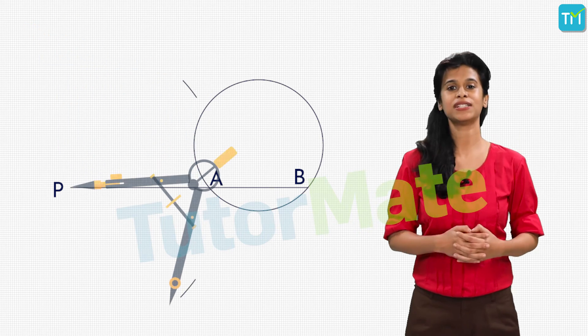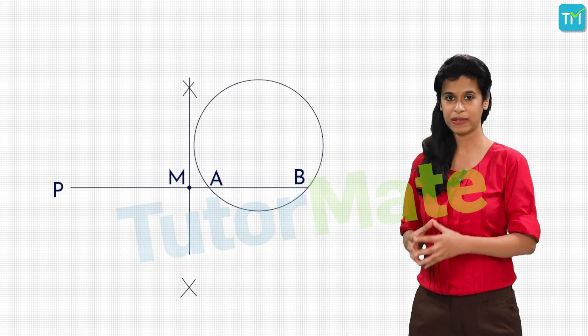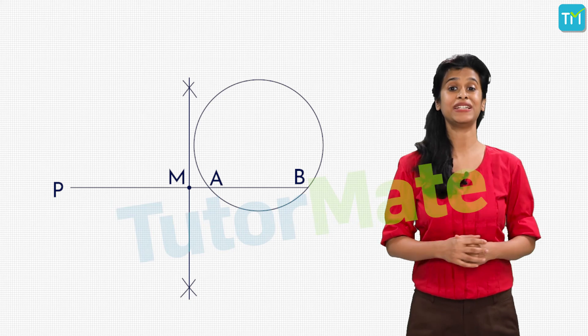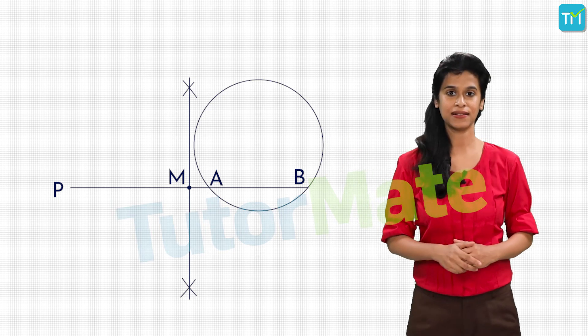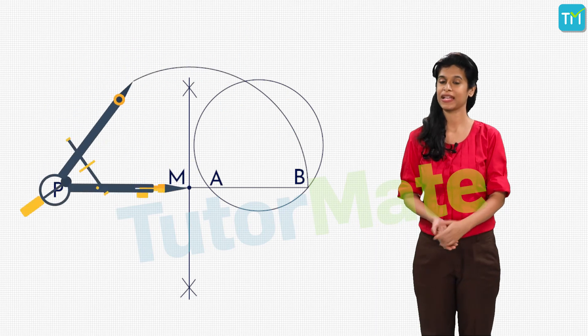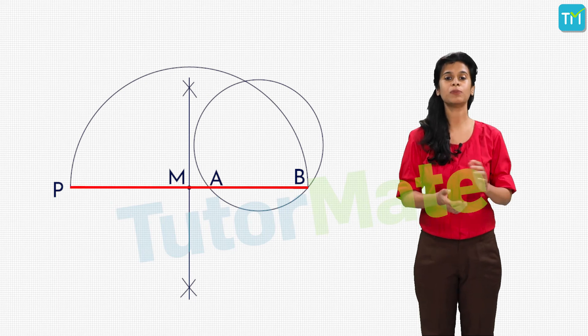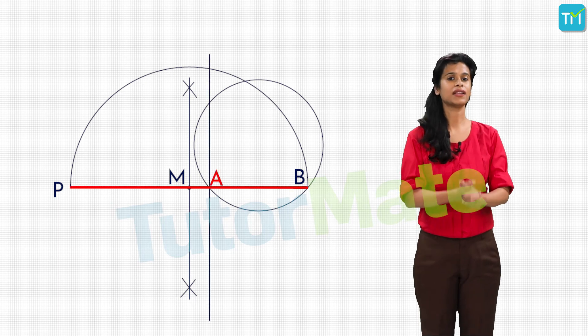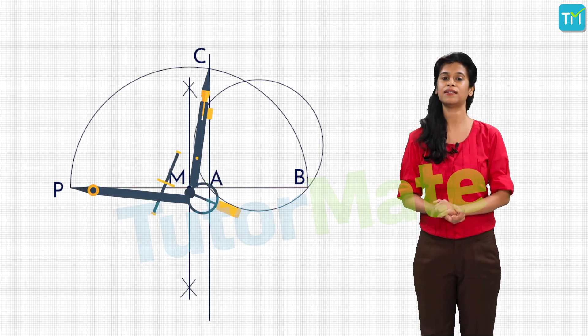Let M be the midpoint of PB. Similar to what we did in the last construction, by taking M as the center and MB as radius, we draw a semicircle. Next, we draw a line perpendicular to PB through the point A. Let it cut the semicircle at C. Then, taking P as center and PC as the radius, we draw an arc.